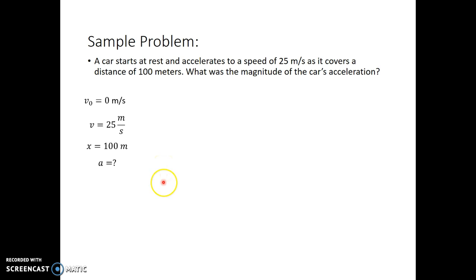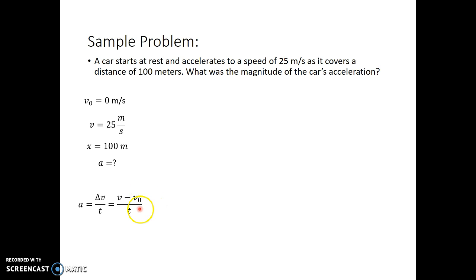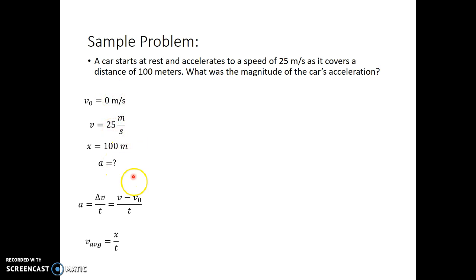So far the only equations we have are my acceleration equation, which tells me that average acceleration is my change in velocity over time — my final minus initial divided by time — and my average velocity equation, which is my displacement over time, x over t. Now if I have initial velocity, final velocity, and position, and I'm looking for acceleration, I can't use either equation because both have time in them. So I'm stuck.